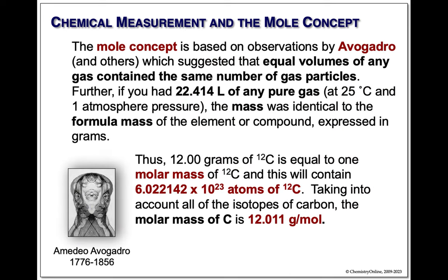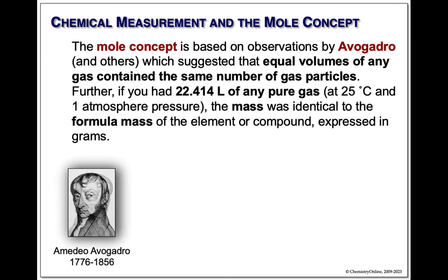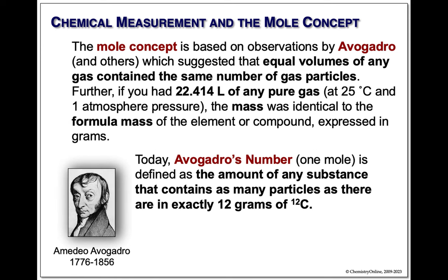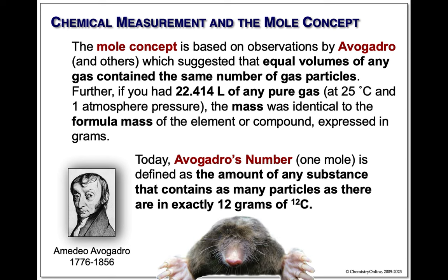Today we define carbon-12 as a standard isotope. Exactly 12 grams of carbon-12 is its molar mass — that's 6 times 10 to the 23rd atoms. The average molar mass is 12.01, but this is only carbon-12, which is the standard. Avogadro's number is now defined as the same number of particles as in 12 grams of carbon-12.